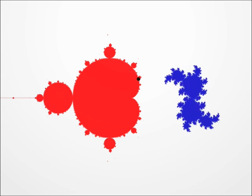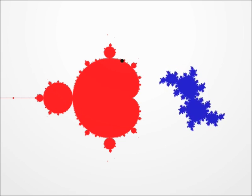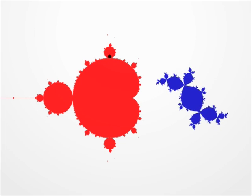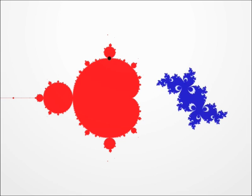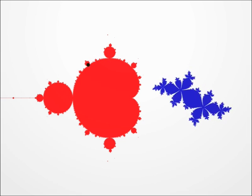But sometimes, for some values of c, the Julia set seems to disappear, and we can't see anything on the screen anymore, like now, for instance. The truth is that the Julia set blew up into an infinite number of pieces so small that you don't see anything on the screen.